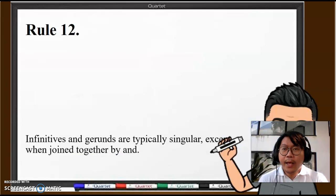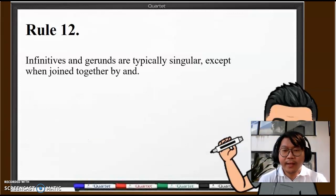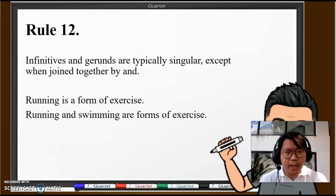Rule number 12: Infinitives and gerunds are typically singular, except when joined together by "and." What's an infinitive? What's a gerund? A gerund is a verb in the -ing form. Normally they function as nouns, therefore as subjects of sentences. For example, "Running is a form of exercise."